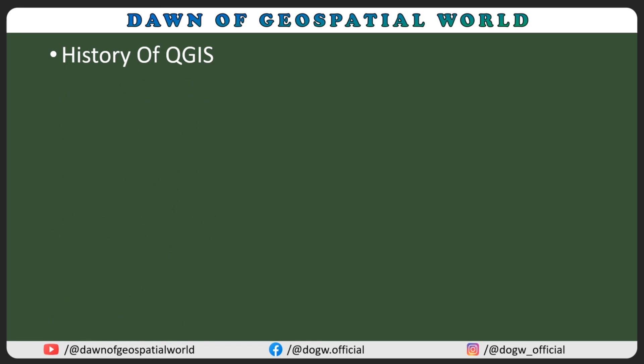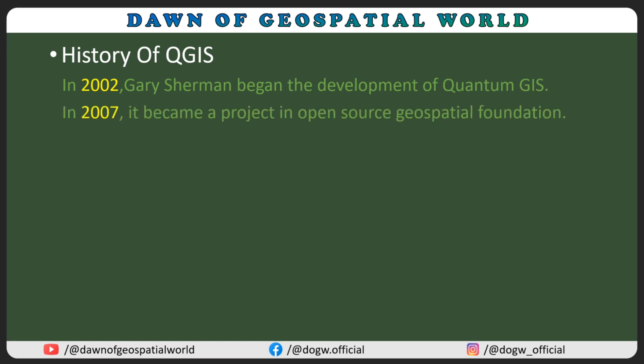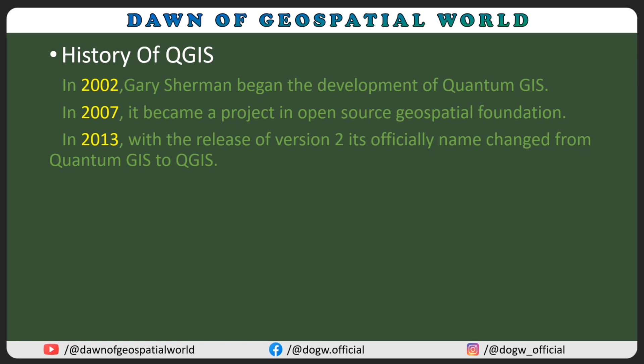History of QGIS: In 2002, Gary Sherman began the development of Quantum GIS. In 2007, it became a project in the Open Source Geospatial Foundation. In 2013, with the release of version 2, its official name changed from Quantum GIS to QGIS. Version 0.0.1 was released in July 2002.